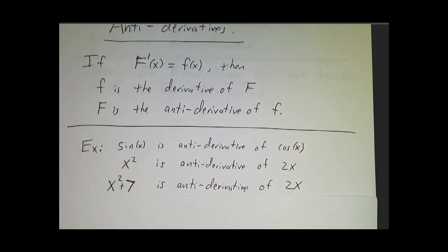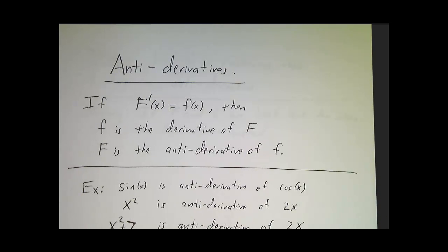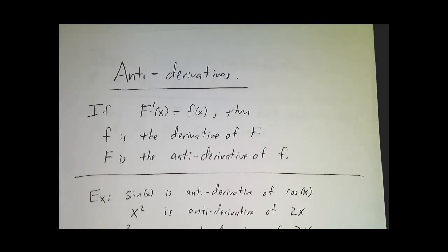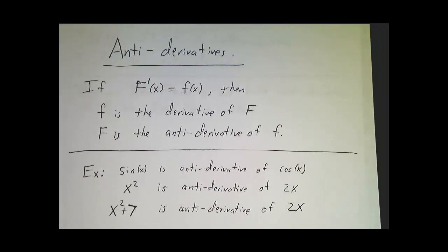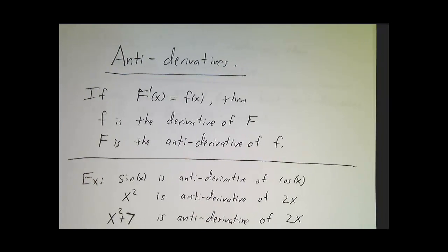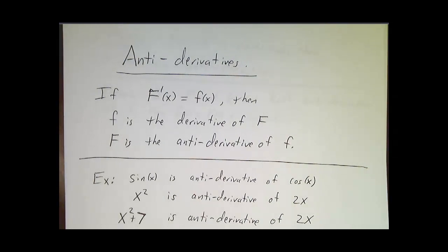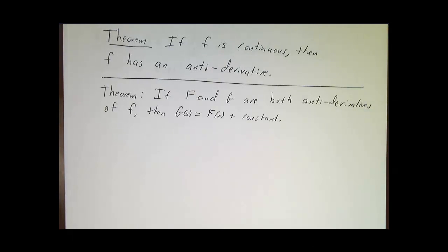x squared plus 12 or x squared minus 13 or x squared plus 3 million and 2 would all have derivatives of 2x. So the natural questions that mathematicians always ask is, if I give you a little f, is there a big F? And if there is, how many of them work?